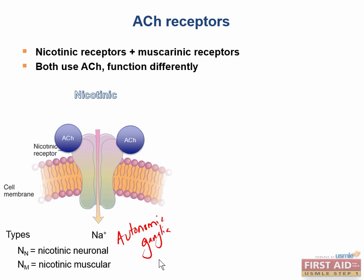Ganglia are just groups of nerve cell bodies. We also have N-sub-M receptors, which stands for nicotinic muscular receptors, and these are found in the neuromuscular junction — so at the level of the muscle.